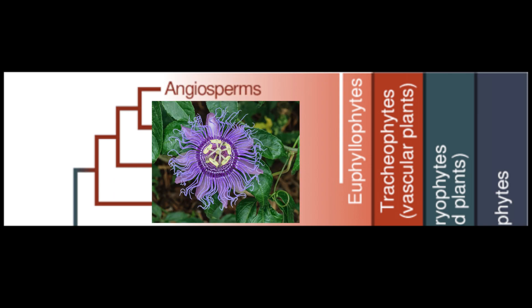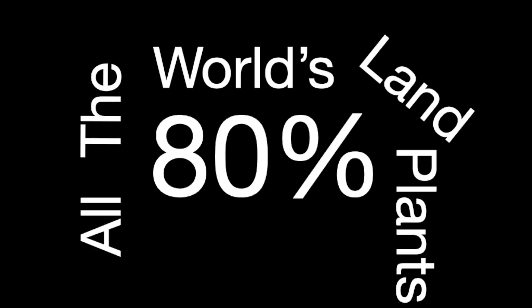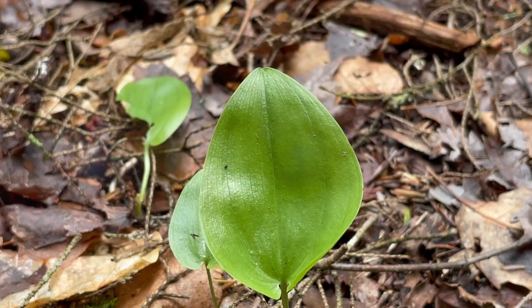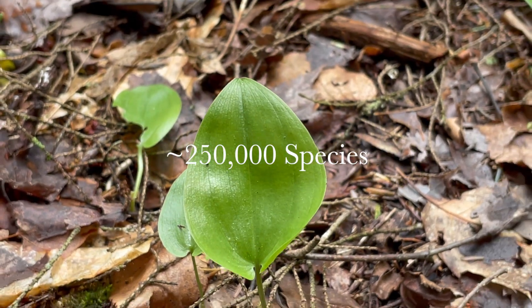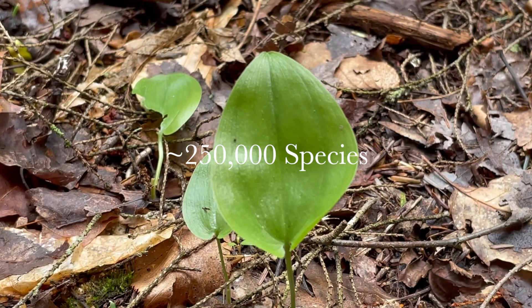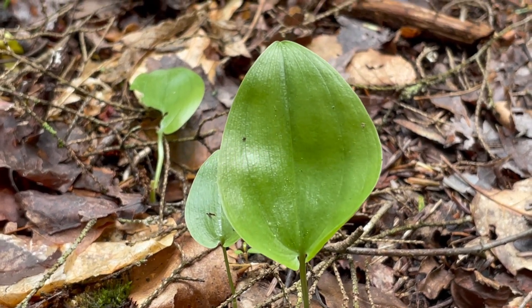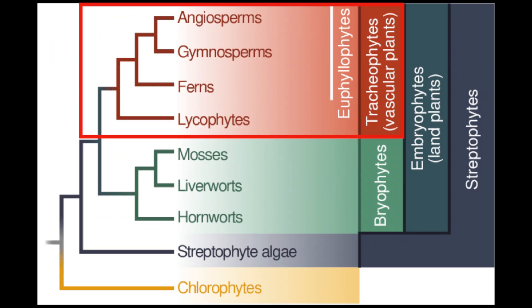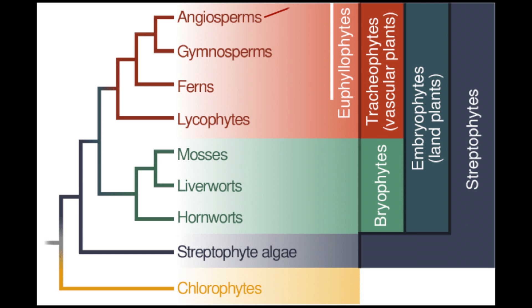Angiosperms constitute around 80% of all of the world's land plants, with over 250,000 species. As such, you can see why this group — which is itself a subdivision of a bigger group, the tracheophytes — is subdivided into smaller groups.